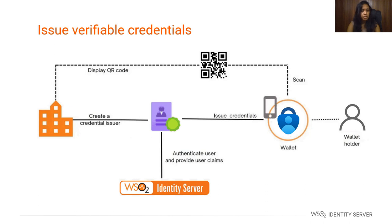First, the issuer organization creates a Microsoft Verified ID issuer to offer credentials, then generates a QR code. The user who wants to claim the credentials scans the QR code via the Microsoft Authenticator Mobile Wallet.